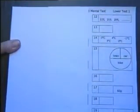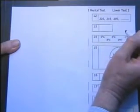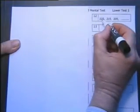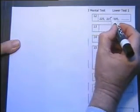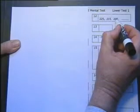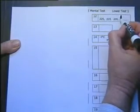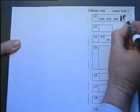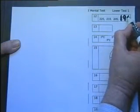Question 12: I'm counting back in steps of 10. 225, 215, 205 — the next number would be 195.